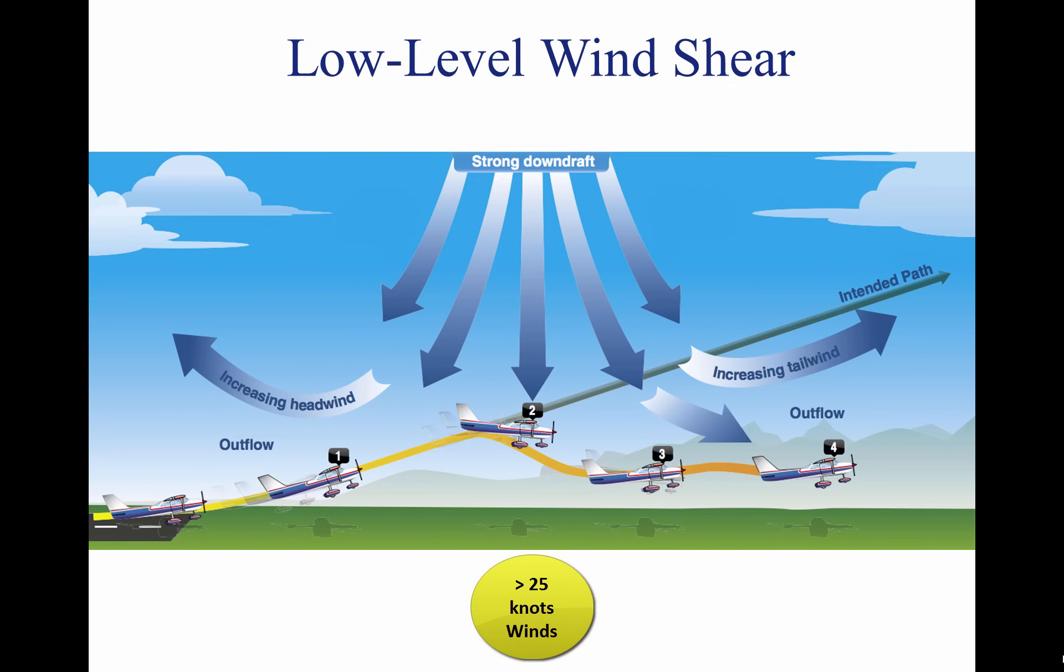In general, the most severe type of low-level wind shear is associated with convective precipitation or rain from thunderstorms. One critical type of shear associated with convective precipitation is known as a microburst.